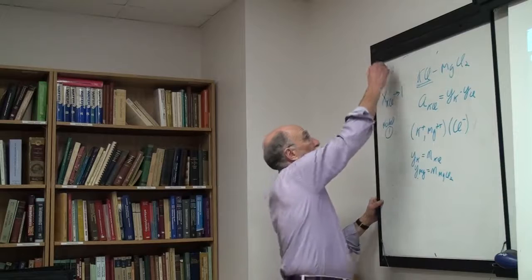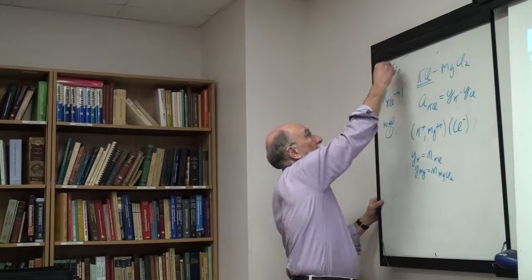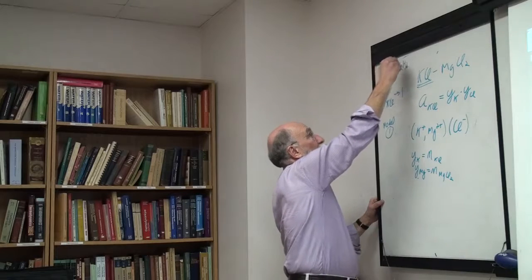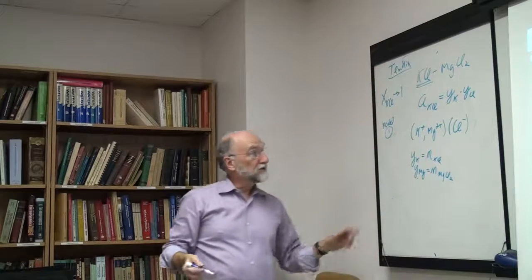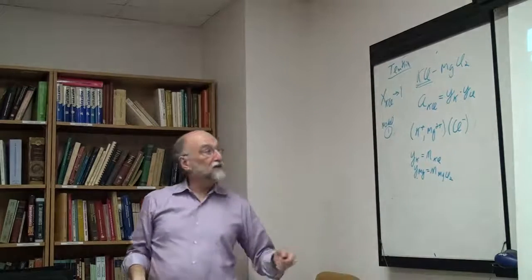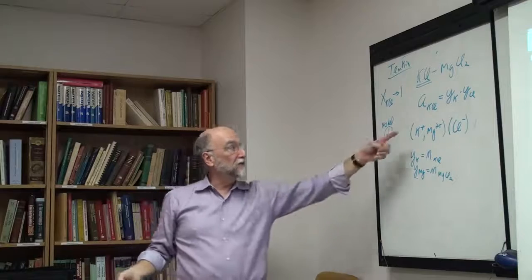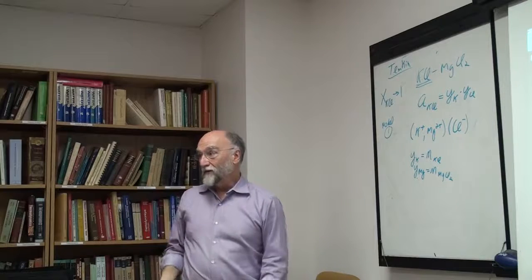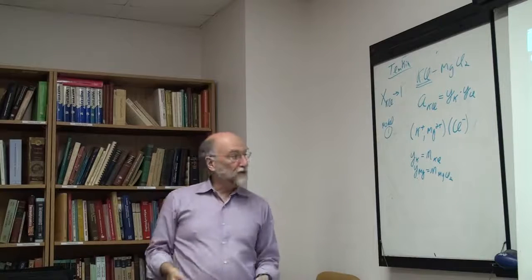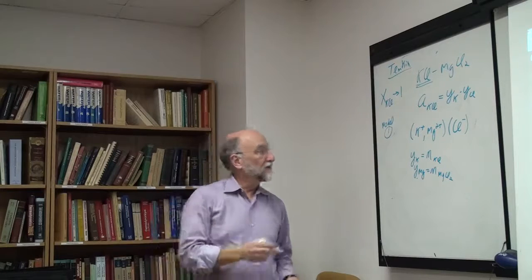Let's take model number one: we'll assume that it's completely dissociated into potassium ions and magnesium ions mixing on one lattice, and on the other lattice you have only chlorine ions. In that particular case, the site fraction of potassium ions is simply equal to the number of moles of KCl, and the site fraction of magnesium ions is simply equal to the number of moles of MgCl2.